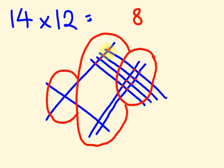1, 2, 3, 4, 5, 6, 6 there. And 1 there. So the answer is 168. Pretty cool, right?